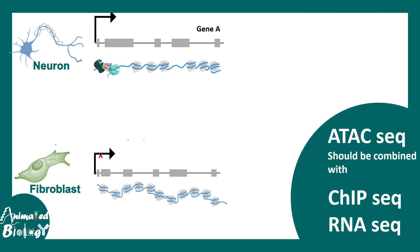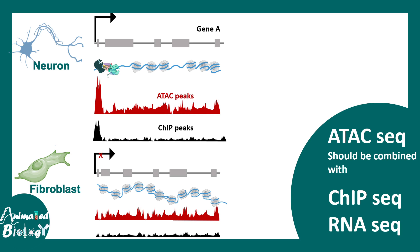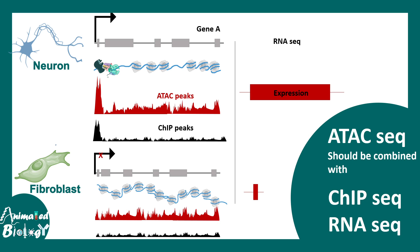ATAC-seq is often combined with other methodologies such as ChIP-seq or RNA-seq. For example, with neurons and fibroblasts and gene A, we look at ATAC-seq peaks for accessibility changes. If the hypothesis is that transcription factor X sits in the promoter and drives transcription, we also look at ChIP-seq peaks, which tell us about transcription factor occupancy. Combining this with RNA-seq, which measures gene expression levels, gives a holistic picture of transcription dynamics. This multi-omics approach — combining ChIP-seq, ATAC-seq, and RNA-seq together — provides comprehensive insight.